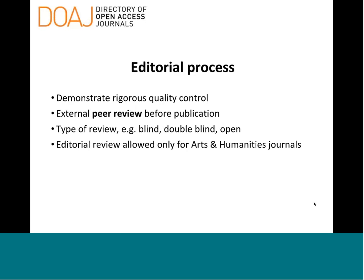You'd expect a journal to have an editor and an editorial board — ideally with at least five members who are experts in the field. This seems self-evident, but it's a check against less scrupulous journals that may include people on their boards without their knowledge. We ask for affiliations to be shown for members so that we can verify if needed, and so anyone using the journal is aware of who the editorial board are.